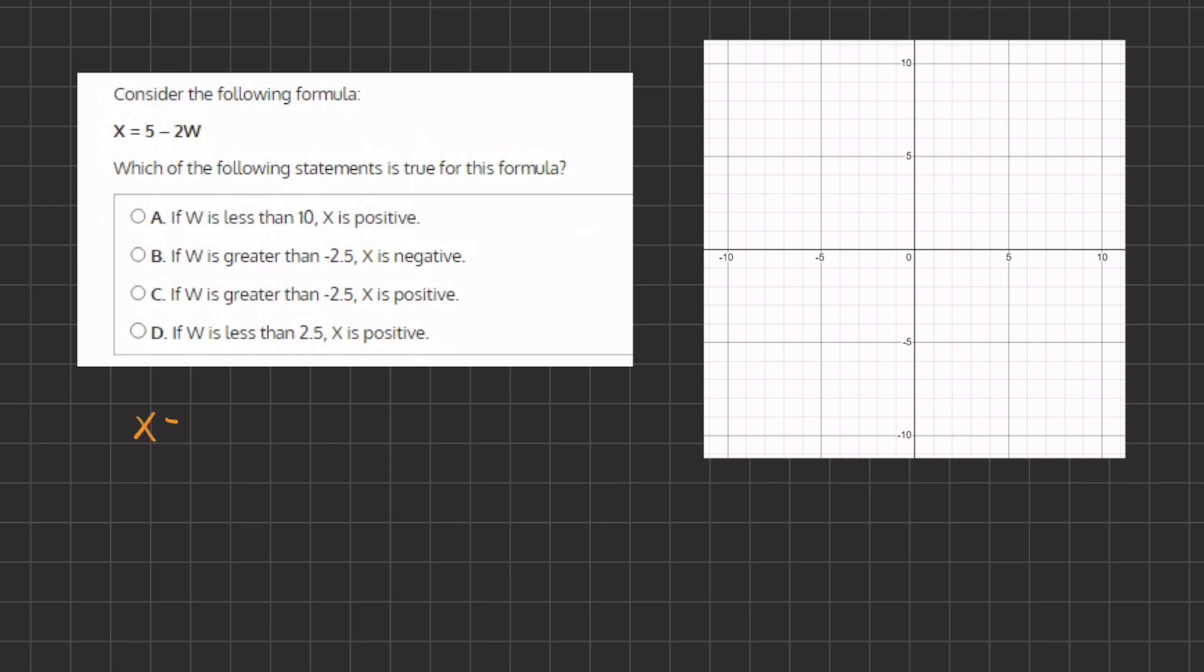So let's pick a point when x equals 0 and when w equals 0. Alright, so when x equals 0, if we plug that in, we have 0 equals 5 minus 2w. If we add 2w on both sides, we have 2w equals 5. And if we divide 2 on both sides in order to isolate w, we have w equals 5 divided by 2, which is 2.5.